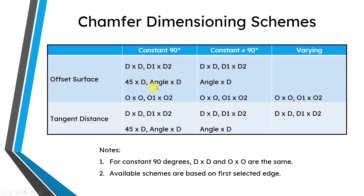At a high level, like I went through in the first video, you have six different dimensioning schemes for a chamfer. There's D by D, where you're going the same distance D back along from the edge. Then there's D1 by D2, where you have different distances along the surfaces from the edge. If you have a 90-degree angle, there's 45 by D. And instead you could use Angle by D, where it has an angular value from the distance D back along one of the edges. And then there's O by O and O1 by O2.